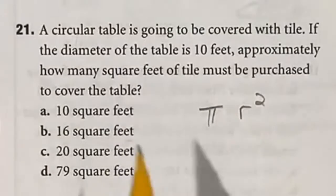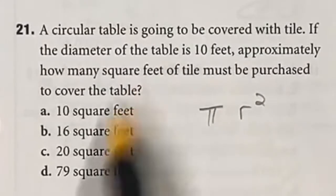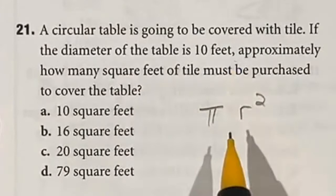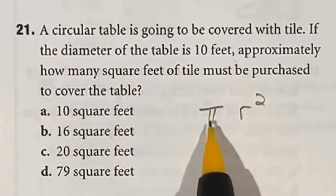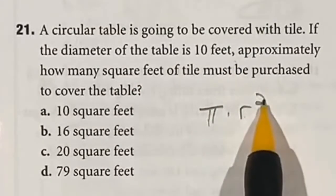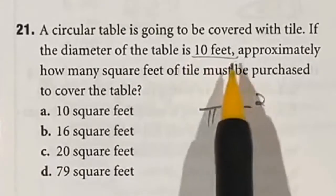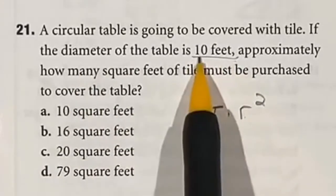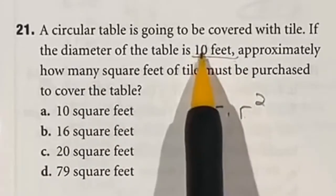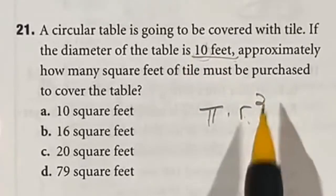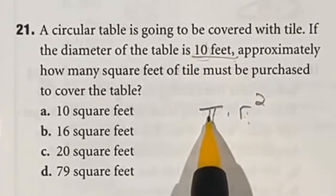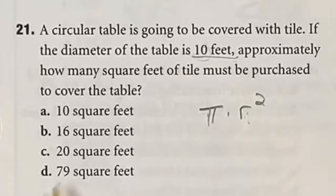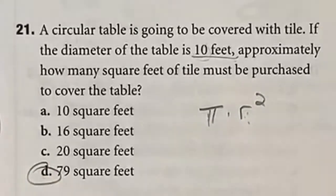How many square feet of tile are you going to need to cover a table that's a circle with a diameter of 10 feet? The area of a circle is pi times radius squared. The diameter is 10 feet, so the radius is half of that — 5. So 5 squared is 25, and we have 25 times pi, which is about 3.14. 25 times 3 is 75, so we know the only option is D.